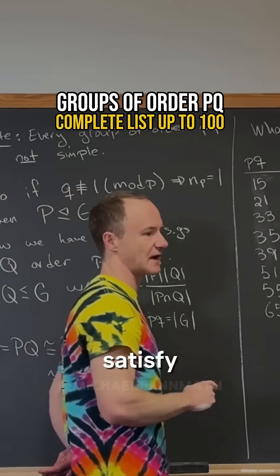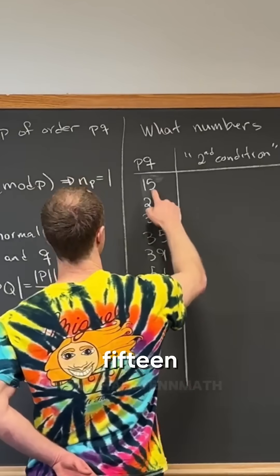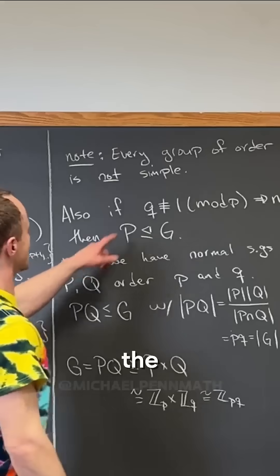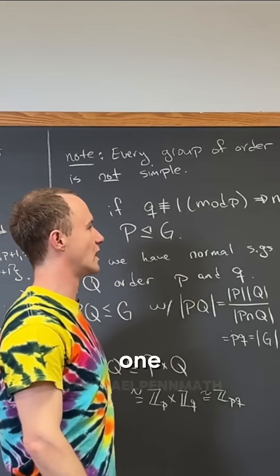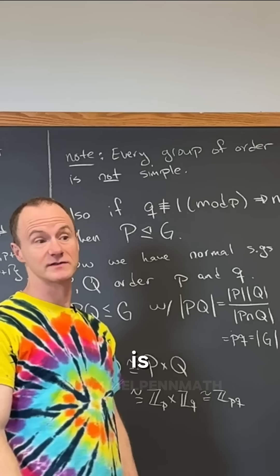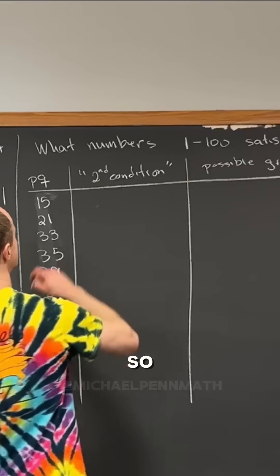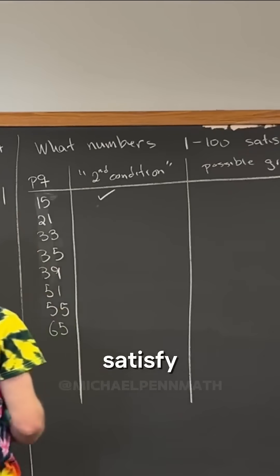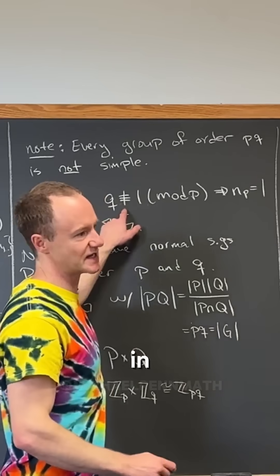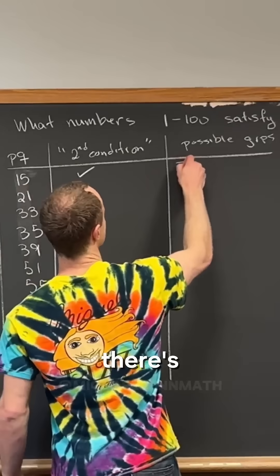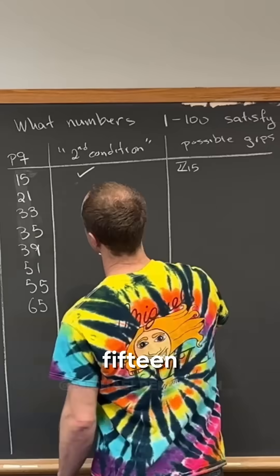Now let's go through and see if these satisfy the first condition or not. So does 15 satisfy the second condition? The larger prime congruent to one mod the smaller prime? Five is congruent to two mod three, right? Yeah. So that means this does satisfy the second condition because this condition is incongruent. So that tells us that there's a single group, Z15, right?